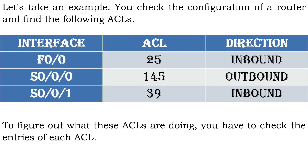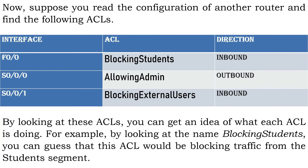Let's take an example. You check the configuration of a router and find some numbered ACLs. To figure out what these ACLs are doing, you have to check the entries of each ACL. Now suppose you read the configuration of another router and find named ACLs — by looking at these, you can get an idea of what each ACL is doing.